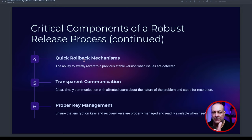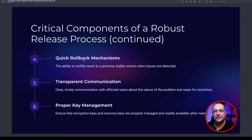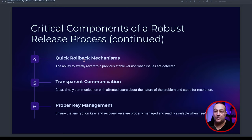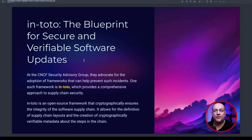The sixth component is transparent communication — which is critical and which we're not getting from CrowdStrike. We need clear, timely communication with affected users about the nature of the problem and the steps for resolution. We've been given very brief information. CrowdStrike's own systems were failing, people couldn't access their site, and the data given was too complicated for companies lacking trained staff. The CEO George Kurtz's gaslighting was not useful communication — in fact it was rather pathetic. Not enough transparency led to the ultimate perfect storm.